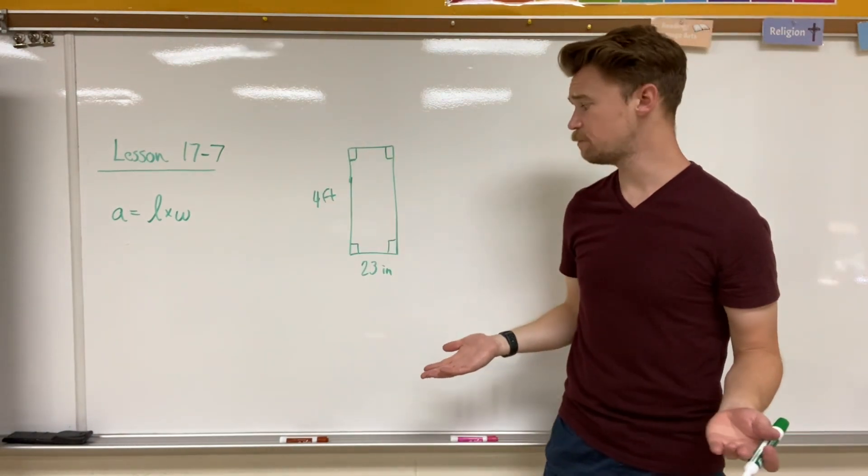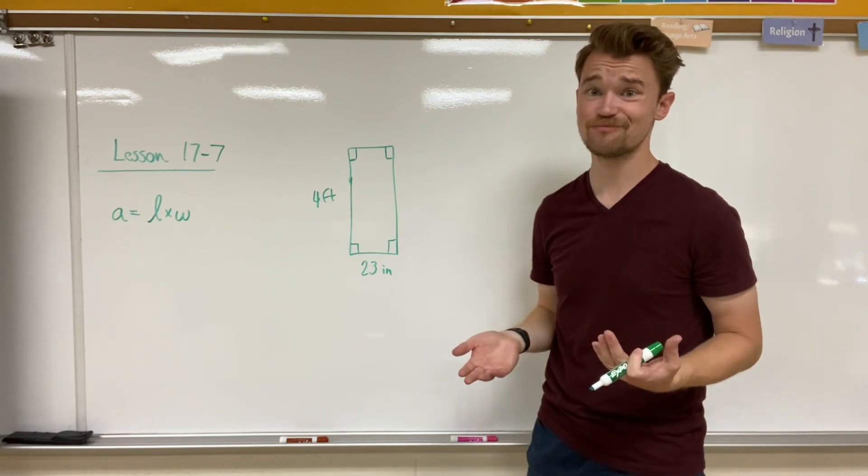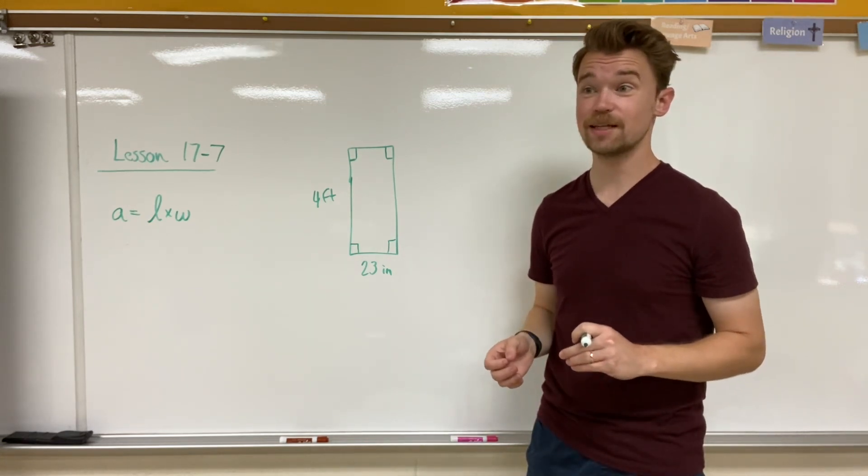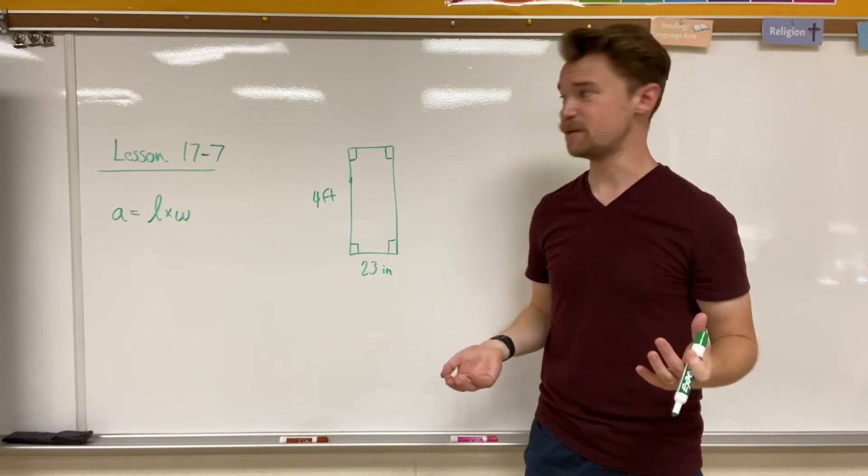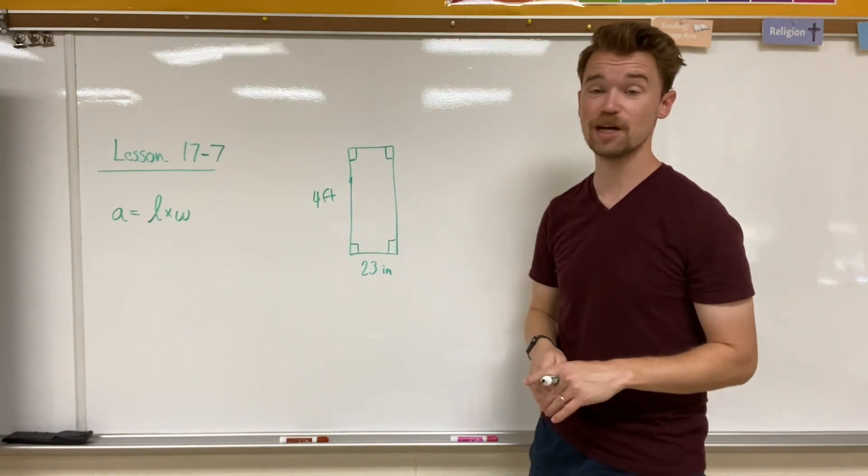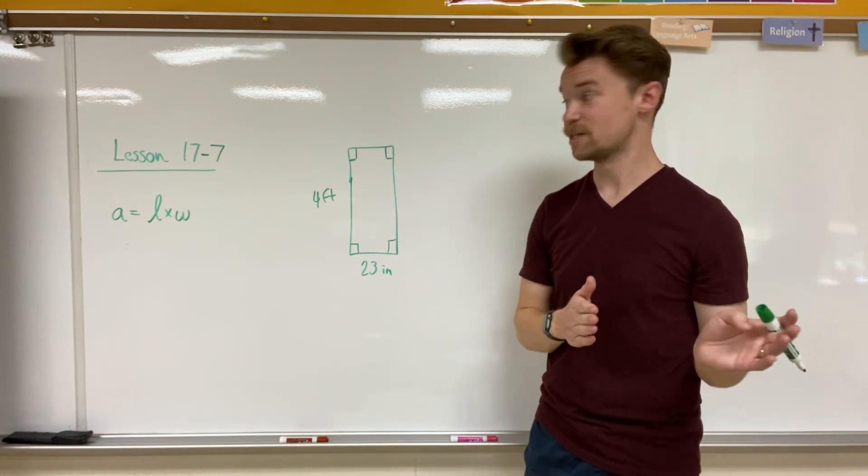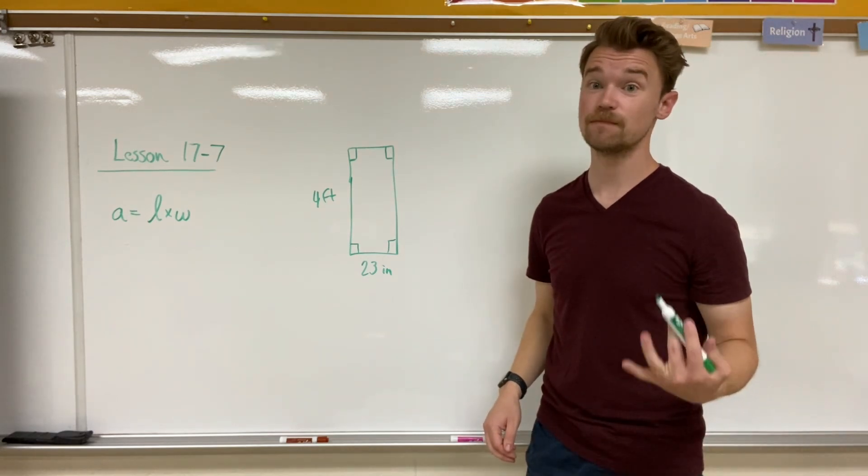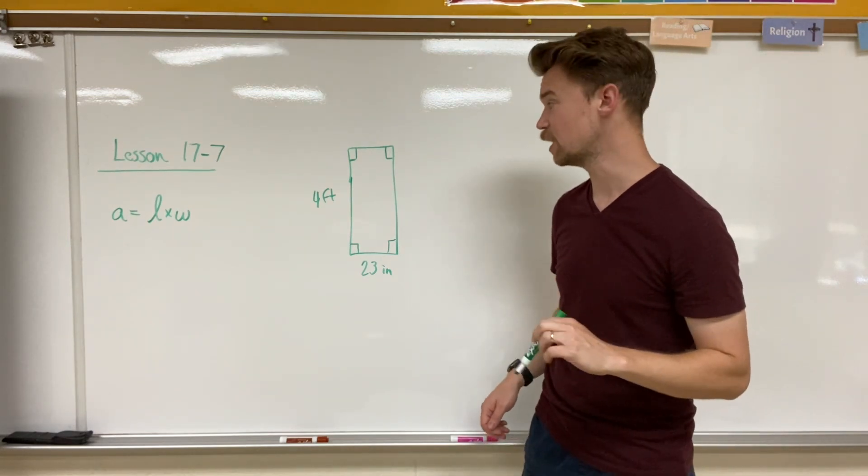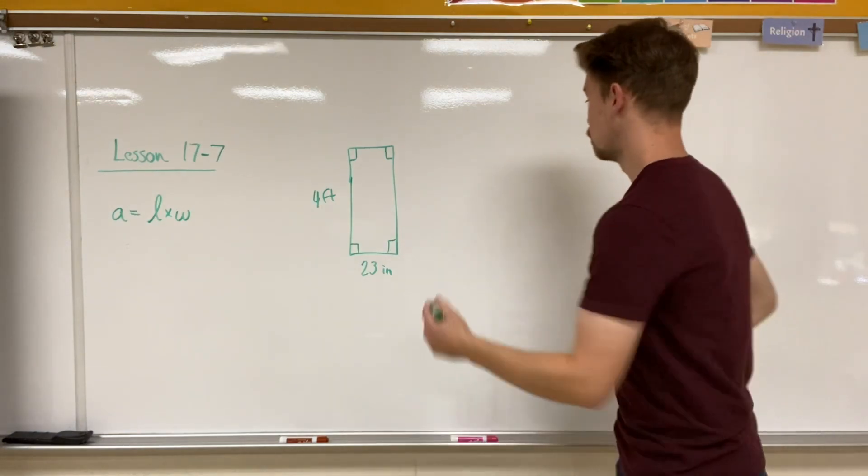So what happens if you have two different types of measurements, kind of like what we did with perimeter? Well, just like perimeter, we have to get both measurements to the same style of measurement. I can't have one foot and one inch measurement. I have to have both of them either be feet or both of them be inches. And I know that 23 does not go into feet equally. 24 does, but not 23. So it'd probably be easier to change four feet into inches. So I'm going to do that right now.